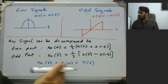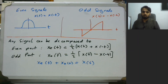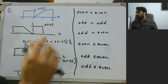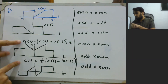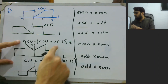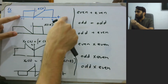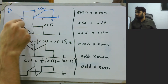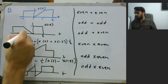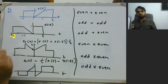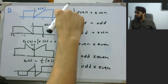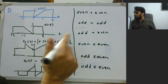Let us look at a brief example. We have a function which is neither even nor odd, and we are interested in finding its even and odd parts. The expressions for even part and odd part are written here, and both require x(-t). From x(t) shown here, x(-t) is just the flipped version — what was on the right side at one becomes minus one, giving us x(-t).